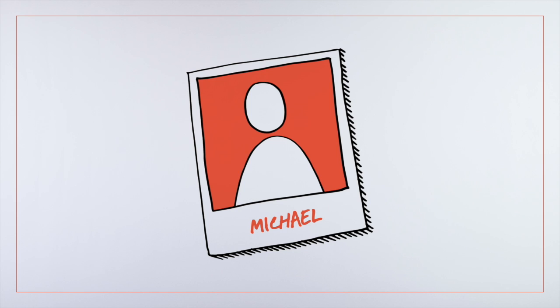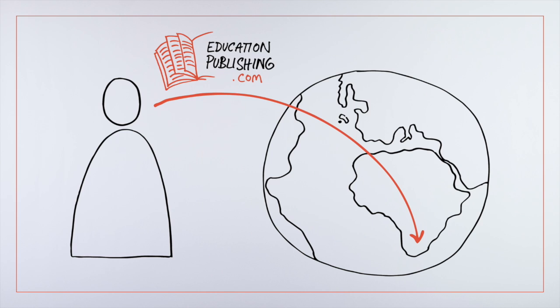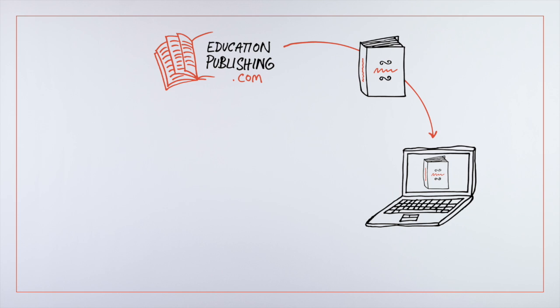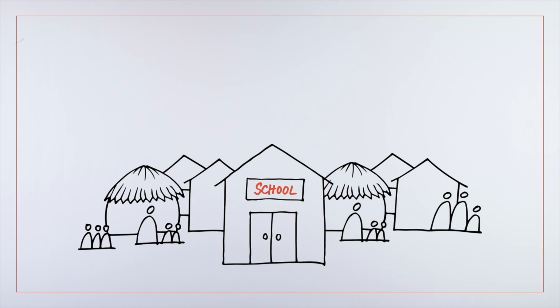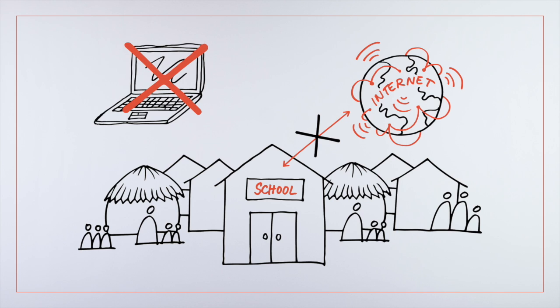Michael is a manager at an educational publisher in South Africa. His company publishes ebooks to provide better learning experiences for young people. But schools in rural areas don't have internet or devices to access the ebooks.